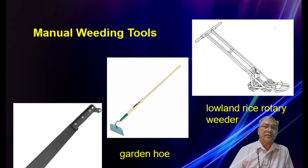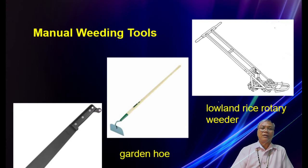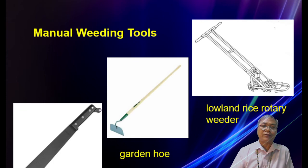Examples of manual weeding tools include the machete, the garden hoe, and the lowland rice rotary weeder — which may still be used in small rice farms today.